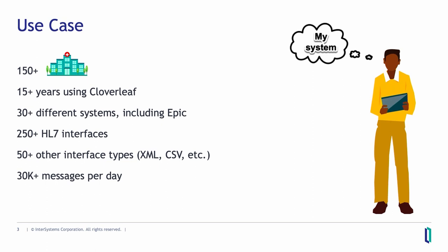They've done quite a bit of stuff in Cloverleaf over these two decades. They've got over 30 different systems — the main one being Epic, but also Via Oncology for their pathways, SureScripts, Philips, Nuance, Escription, MatrixCare — a whole lot of stuff as is typical. About 250 and change HL7 interfaces, and this is the focus of our work.